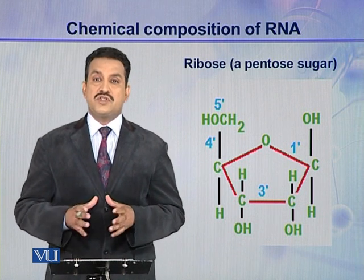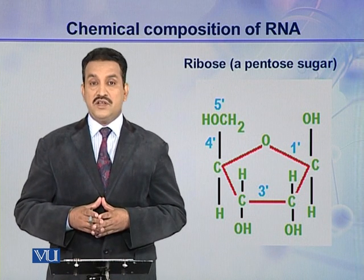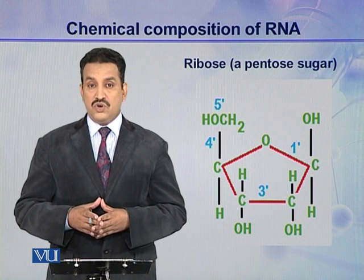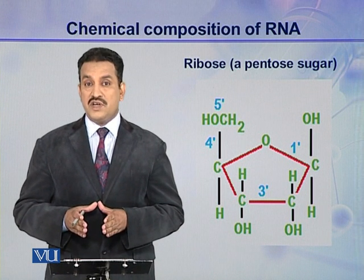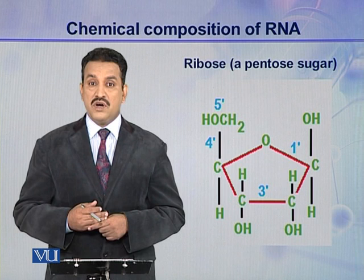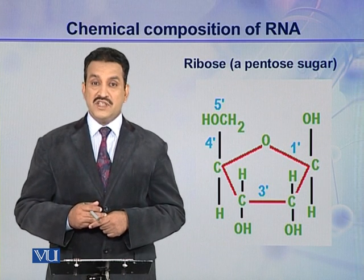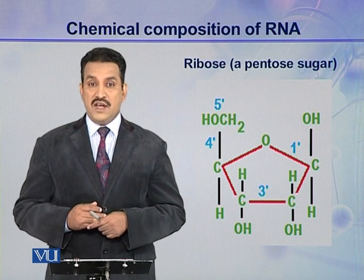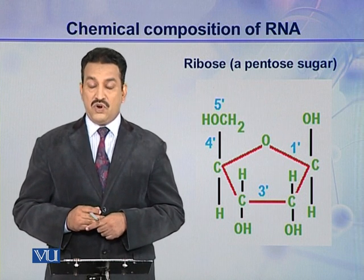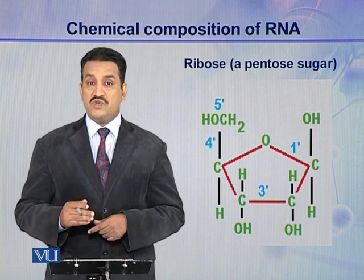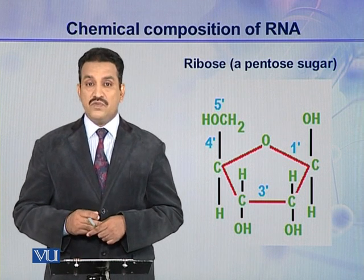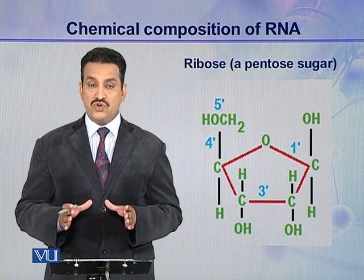The first component of ribonucleic acid is a pentose sugar, and this pentose sugar is ribose. In DNA, this sugar is also present but in its derivatized form — deoxyribose sugar. At carbon number two, an OH group is present here in ribose. But in the case of deoxyribose sugar, only hydrogen was present — oxygen was removed. So the pentose sugar here is ribose instead of deoxyribose.